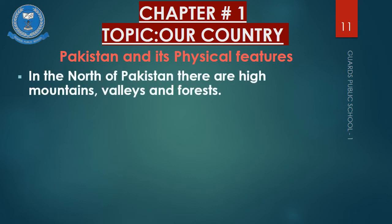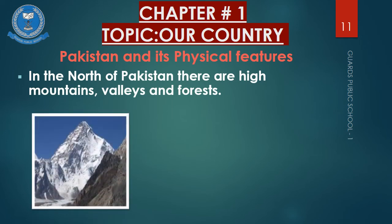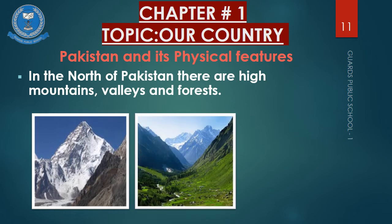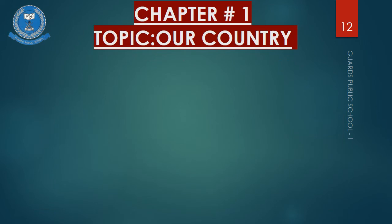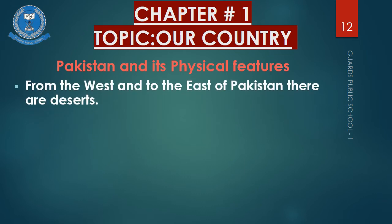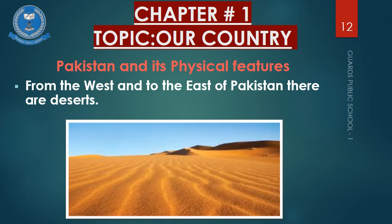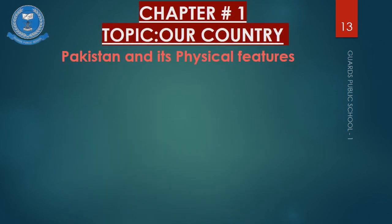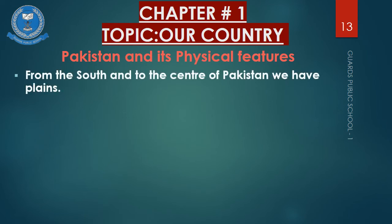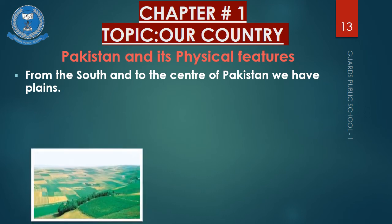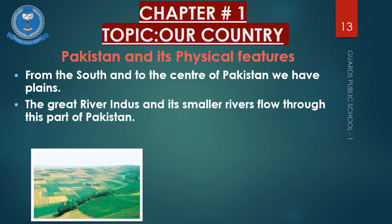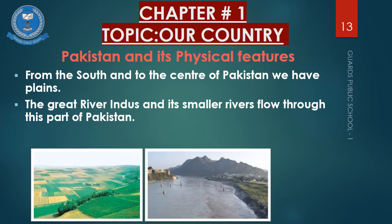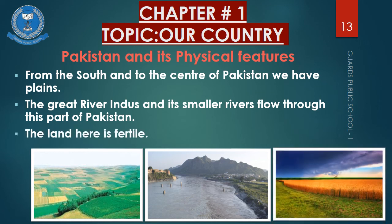In the north of Pakistan we have high mountains covered with snow, deep valleys and thick forest. From the west to the east of Pakistan we have hot, dry, sandy deserts. From the south to the centre of Pakistan we have plains, which means flat areas of land. The great river Indus and its smaller rivers flow through this part of Pakistan. The land here is fertile, which means good crops can be grown here.